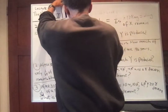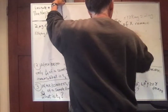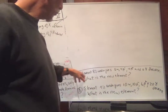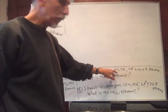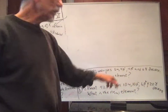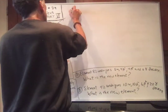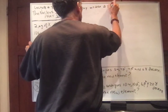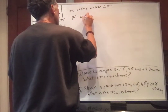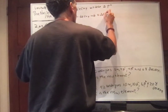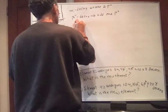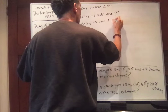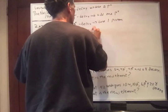Now let's do another type of problem involving alpha, beta, and gamma decay. In alpha decay, you lose two protons. In beta minus decay, you gain one proton. In beta plus decay, you lose one proton. In gamma decay, nothing happens to the proton count.